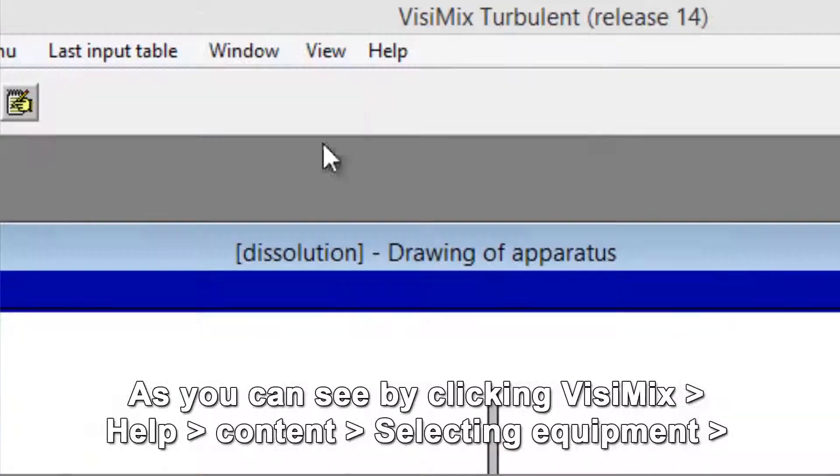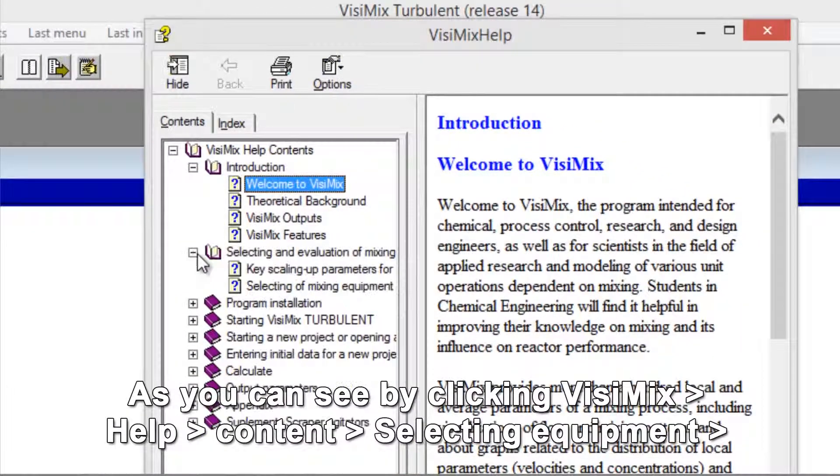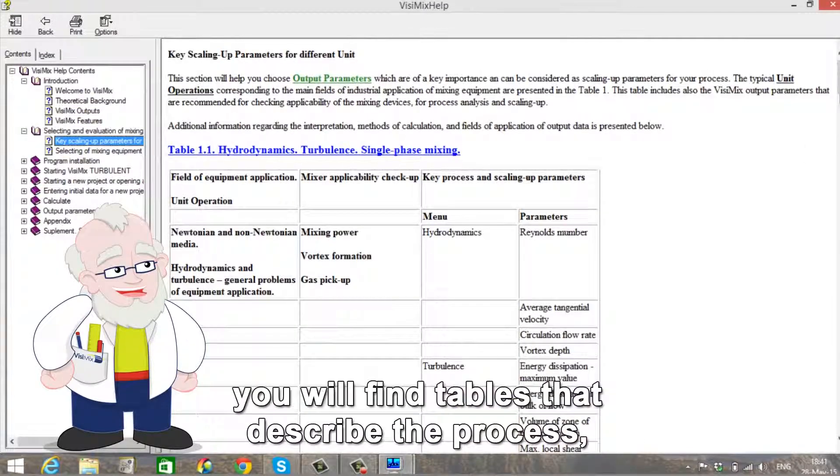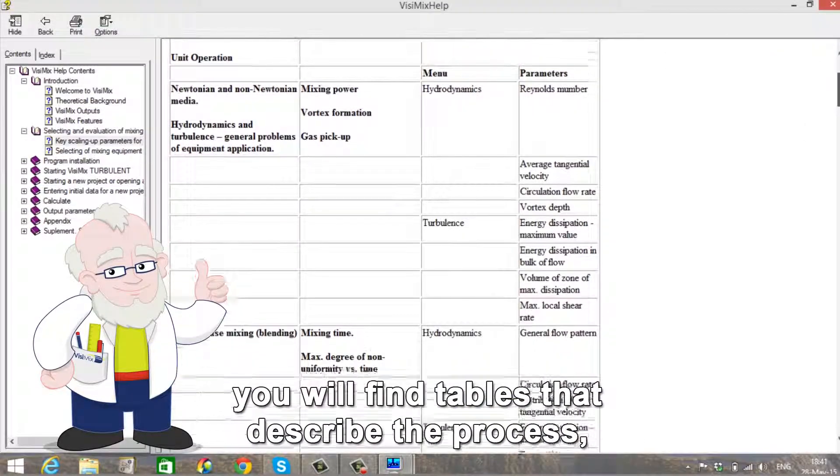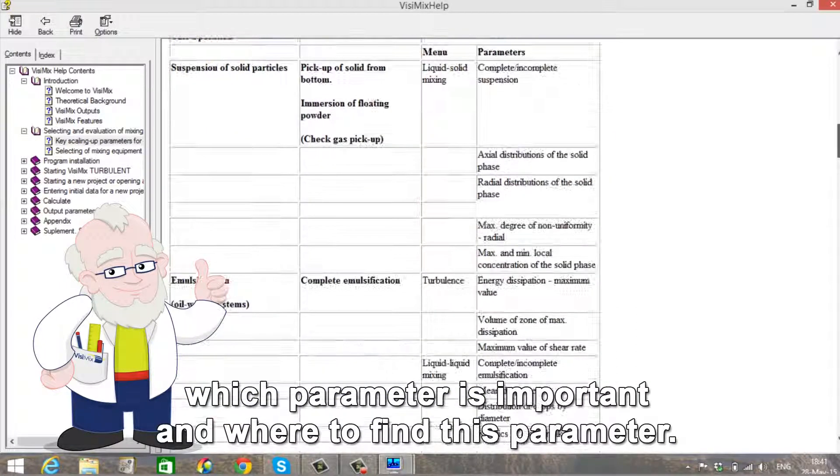As you can see by clicking Vizimix help, content, selecting equipment, key scaling up parameters for different unit operations, you will find tables that describe the process, which parameter is important, and where you can find this parameter.